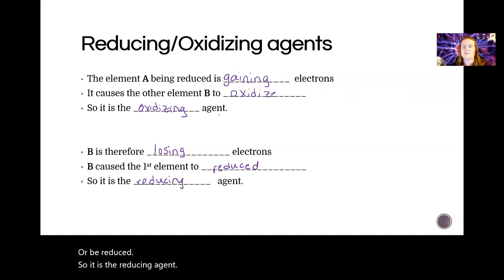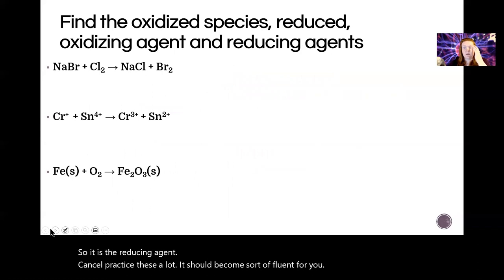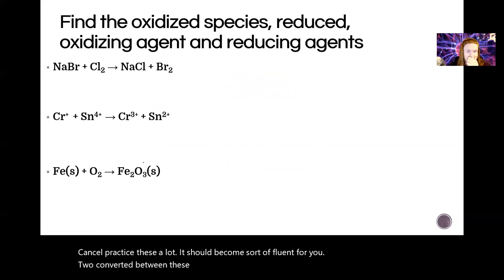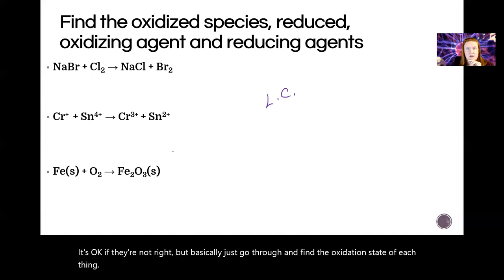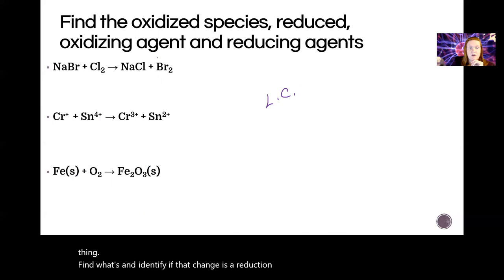Okay, so practice these a lot. It should become sort of fluent for you to convert between these things. What I want you to do is give these a shot and we're going to put them into the learning check. It's okay if they're not right, but basically just go through and find the oxidation state of each thing, find what's changing, and identify if that change is a reduction or an oxidation, and then assign our vocab words.